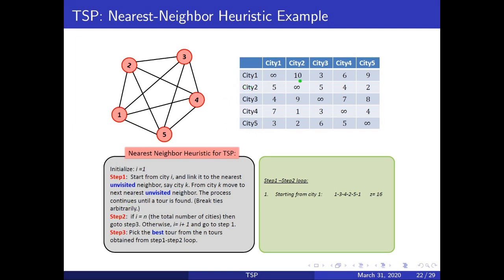Similarly, from city number 2 the nearest unvisited city will be city number 5. So you eliminate the column of city 2, and city number 5 will be the next city. From city 5, the nearest unvisited city will be city 1. From city 1 the nearest unvisited city will be city 3. From city 3 the nearest unvisited city will be city 4. And from city 4 you will come back to city number 2. So the nearest neighbor tour from city 2 will be 2-5-1-3-4-2.